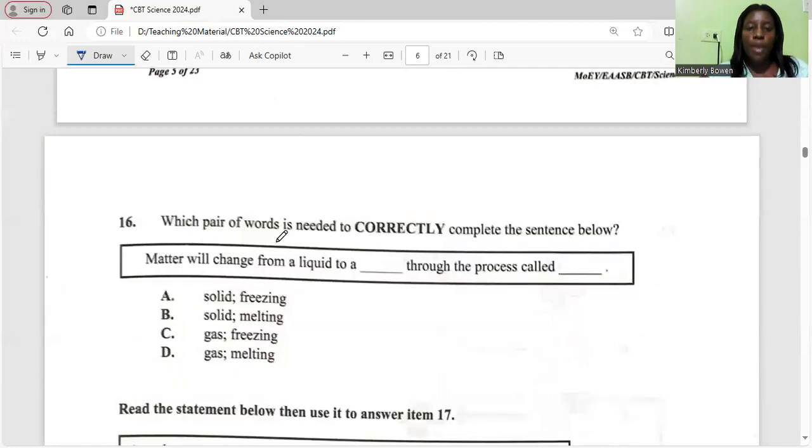Which pair of words is needed to correctly complete the sentence below? Matter will change from a liquid to a blank through the process called blank. Let's look at them. Solid freezing. Matter will change from a liquid to a solid through the process of freezing. That looks like the answer. Matter will change from a liquid to a solid by melting. That's not correct. The correct answer is A.